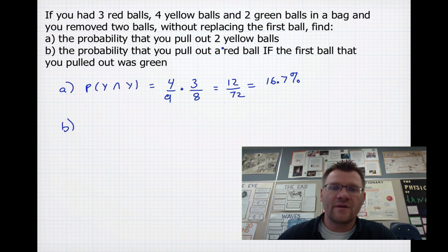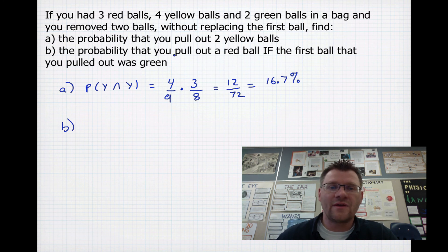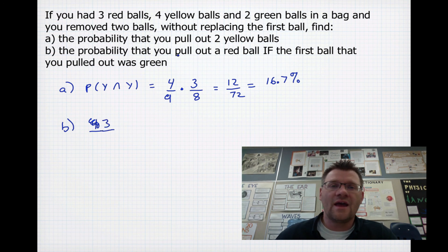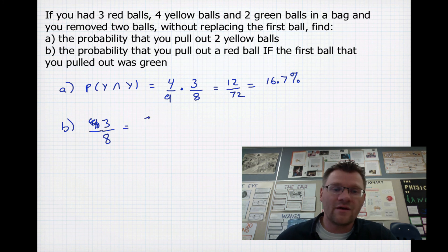Part B: the probability of pulling out a red ball if the first ball pulled out was green. If we pulled out a green ball, there are still three red balls and four yellow balls, but one less ball in the bag overall — eight total. So the probability is simply 3 out of 8, giving a final probability of 37.5%.